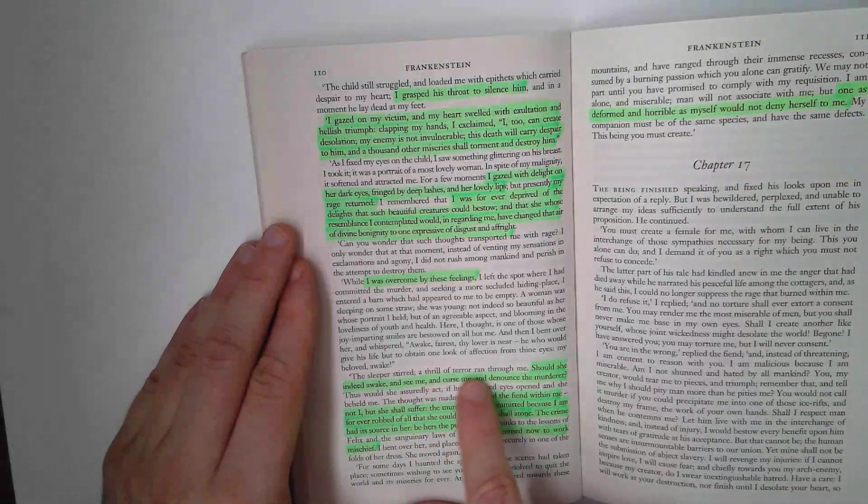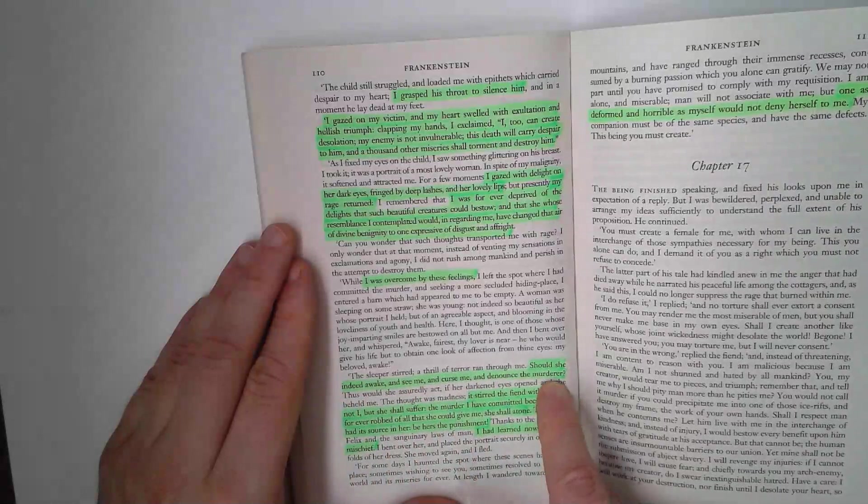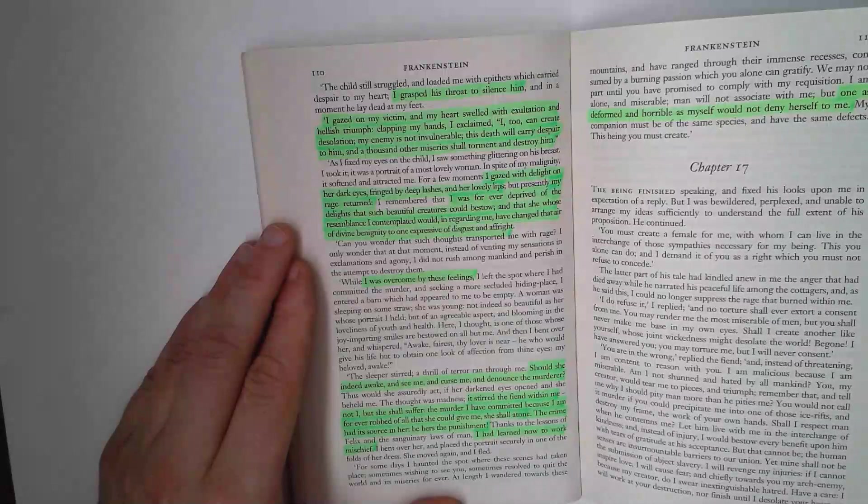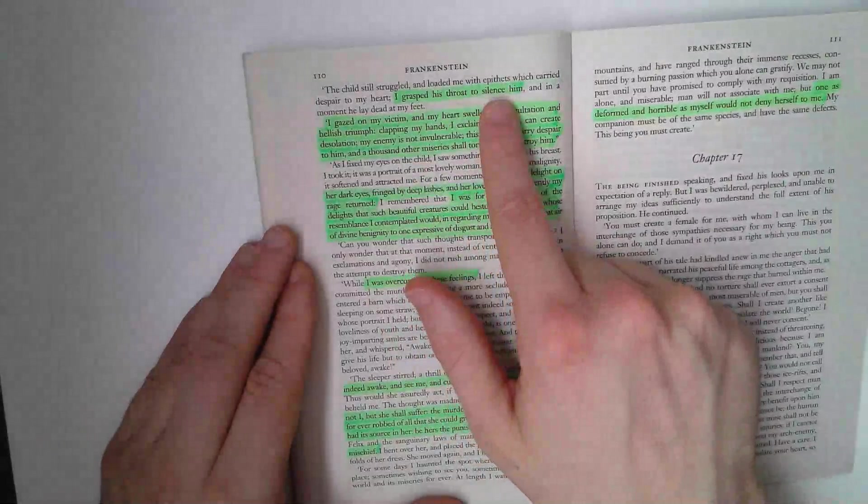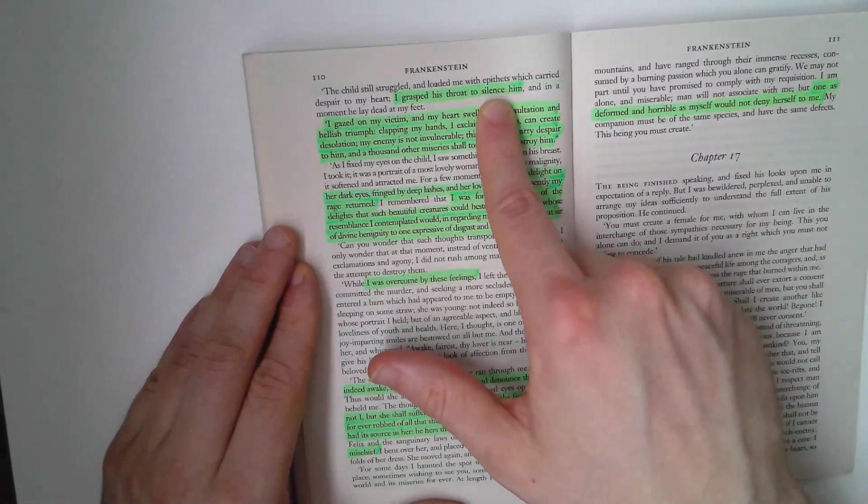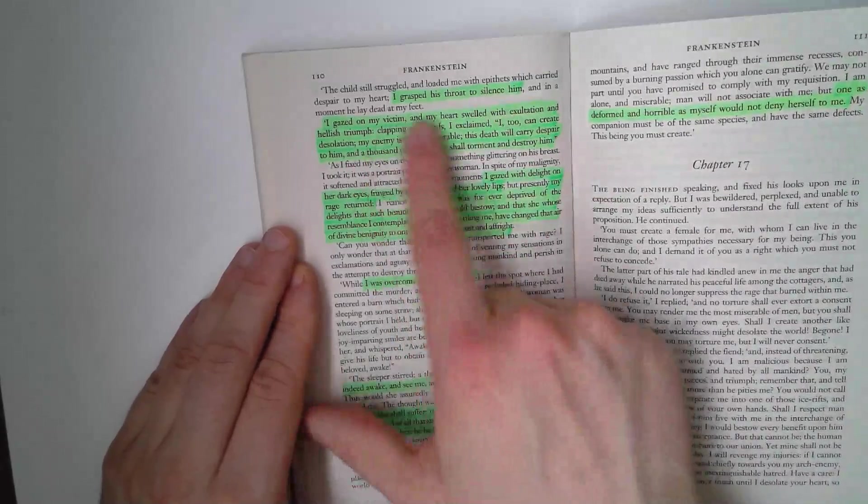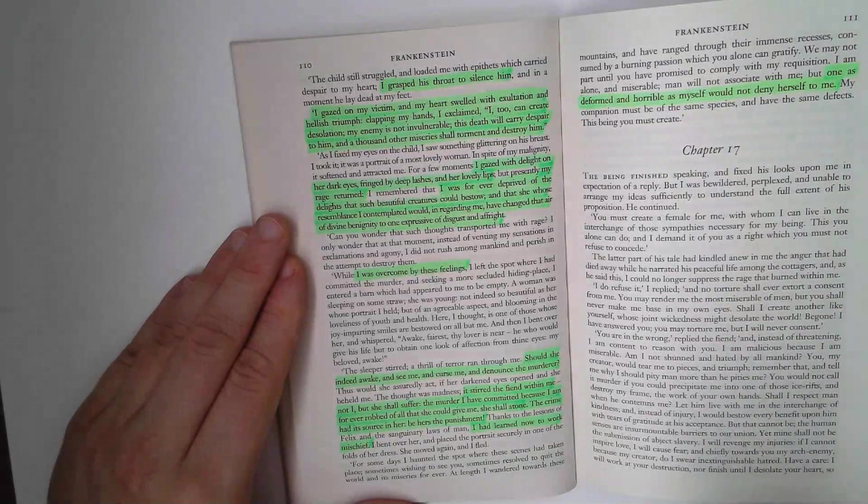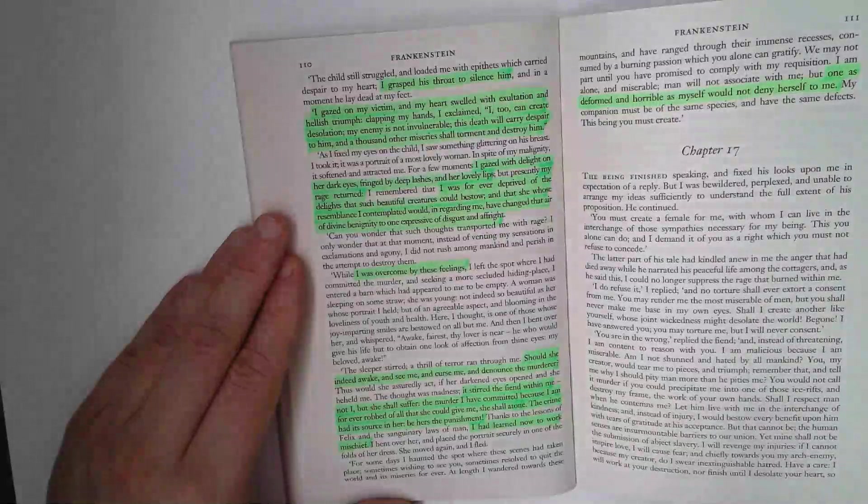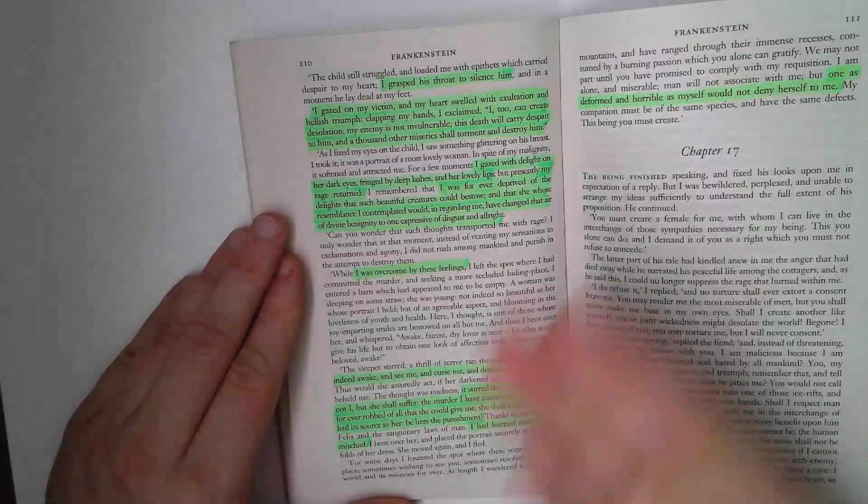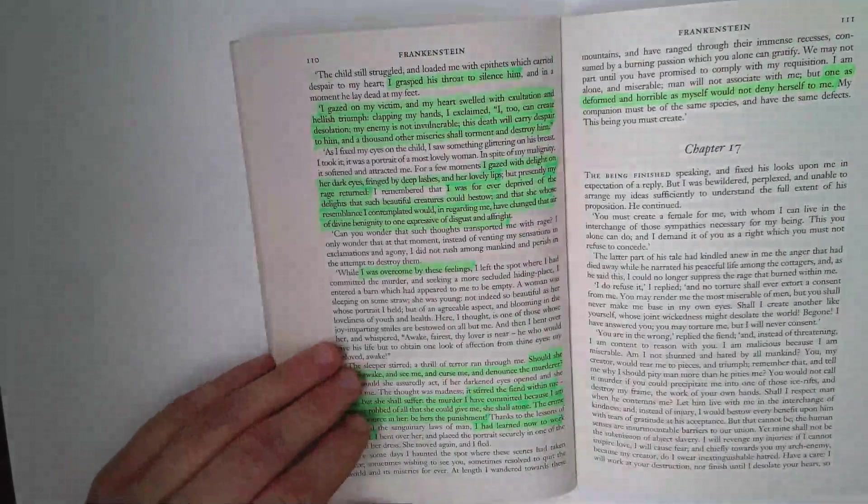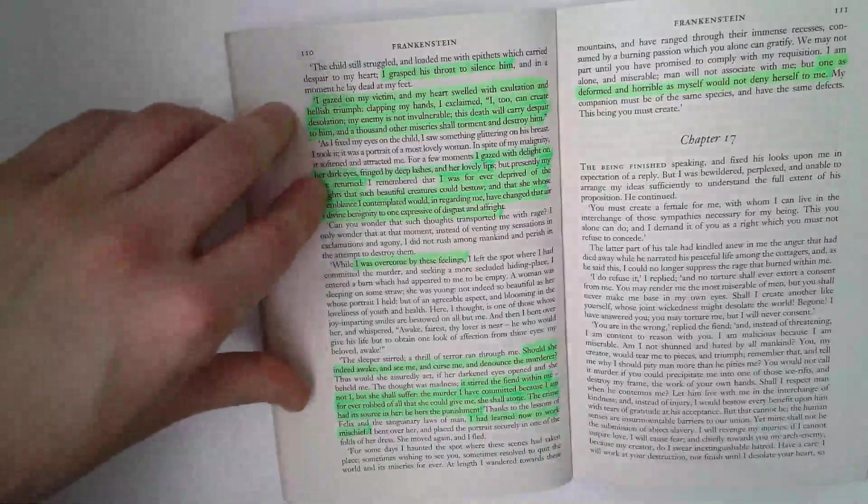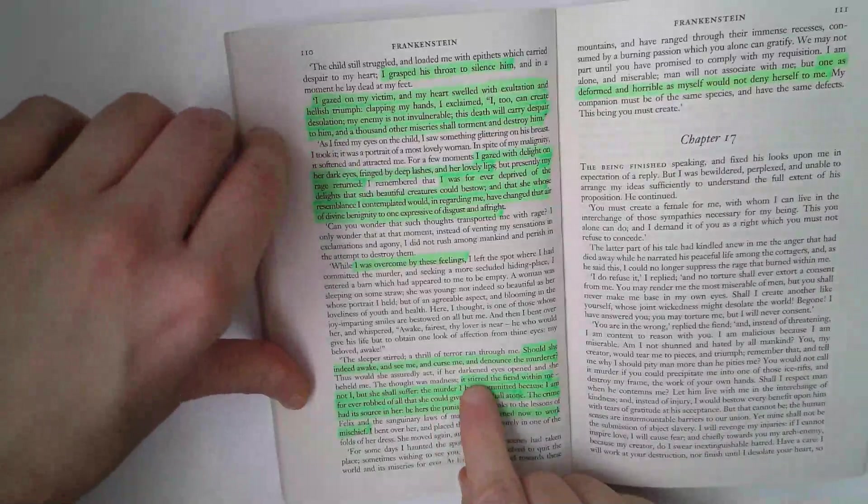The sleeper stirred, and a thrill of terror ran through me. Should she indeed awake and see me and curse me and denounce the murderer? It stirred the fiend within me. Now, this is quite interesting, because the creature, if he's just lost control of his aggression here, we can perhaps forgive that as an accident. And I know his response is obviously saying this is nothing at all accidental. But what he does here is the creature deliberately does something wrong. He's seen that he can be wounded, the creature. He's been shot in the leg. So he would feel potentially he'd fear for his life here. But now what he does is he deliberately knows that it is wrong to frame someone for death.